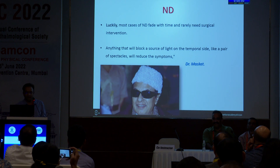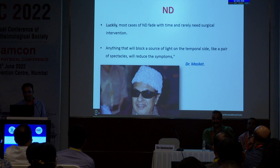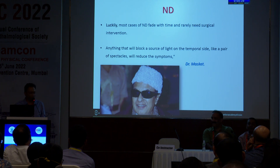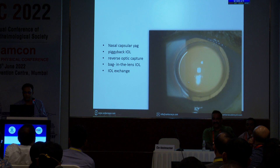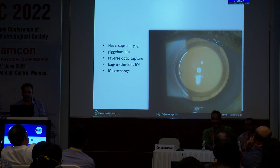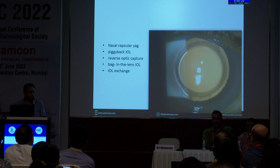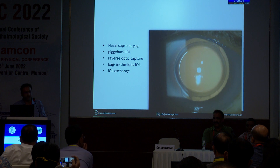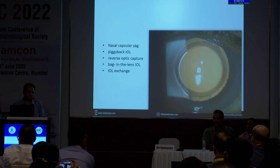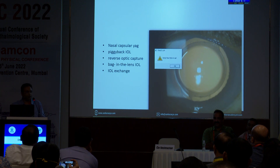Masket explained that it can occur only with any lens that is well-placed, well within the bag — exactly what all of us have been trained to do. Luckily, most cases do fade away. Masket said that anything blocking the source of light on the temporal side, like a pair of spectacles or sunglasses, will help reduce symptoms. The treatment options described include YAG capsulotomy of the nasal anterior capsule, piggyback IOL, reverse optic capture, bag-in-the-lens IOL, and IOL exchange — but all of these are quite difficult decisions, especially when you know you have done the best surgery.